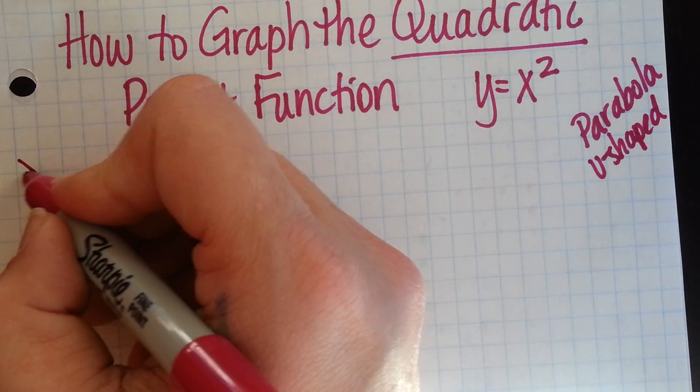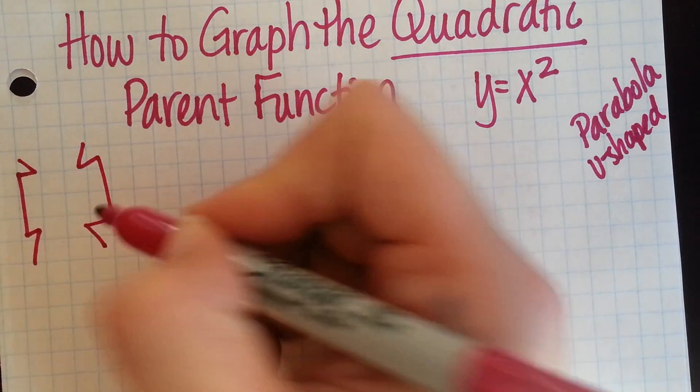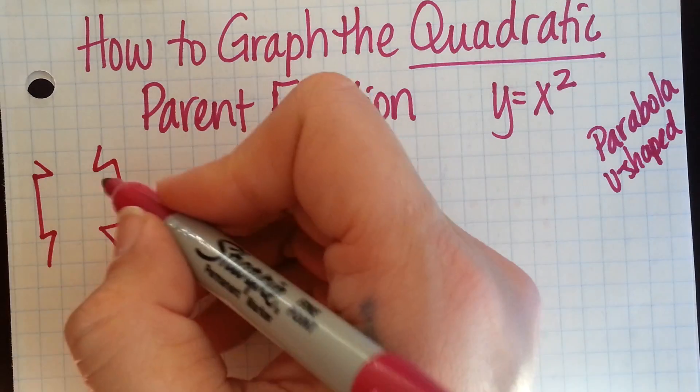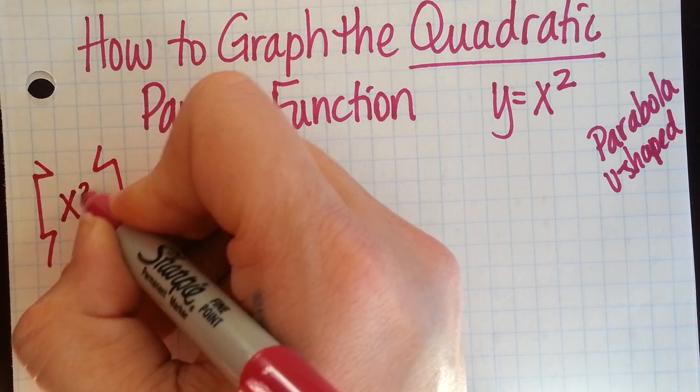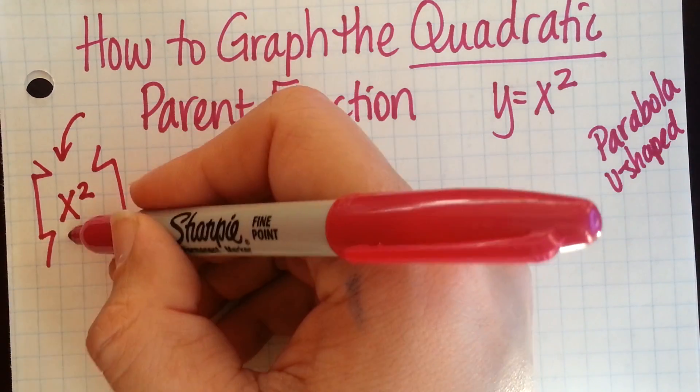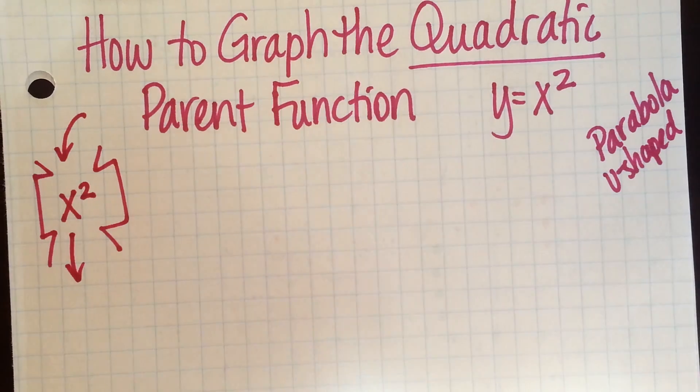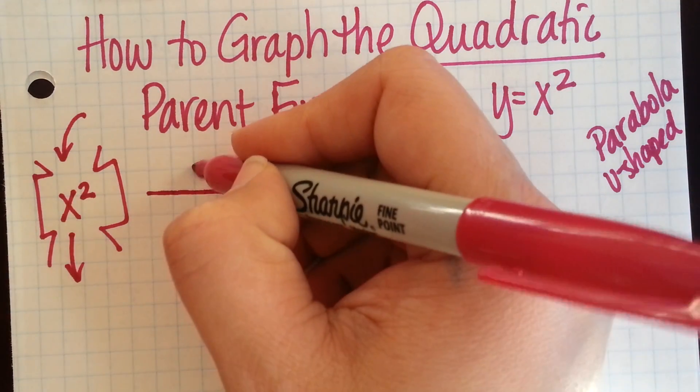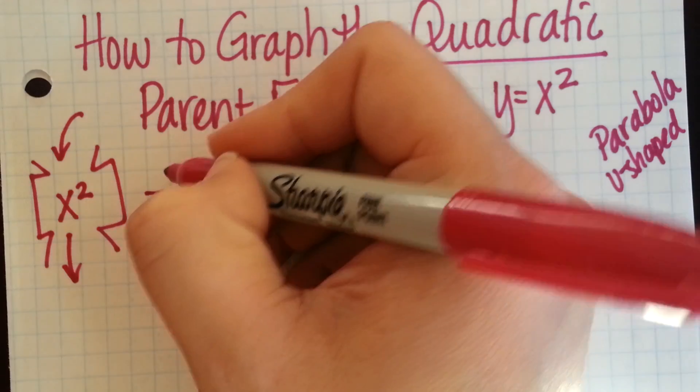Just as we talked about at the beginning of the year, we could put anything that comes after the y equals in our function machine. And this shows us that whatever we throw in, we're going to square and then throw out. So let's jot down some points. Always a good place to start,